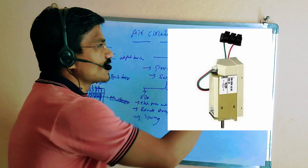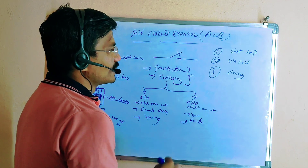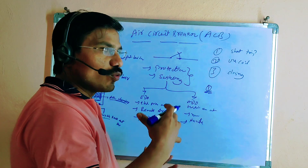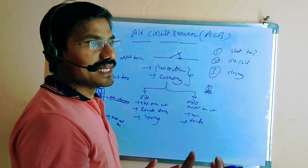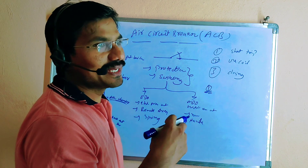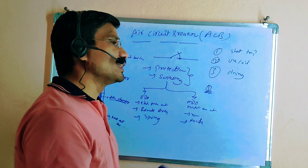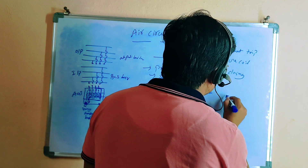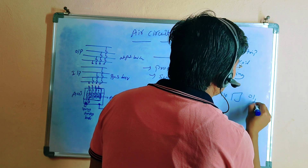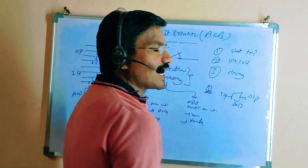In this breaker there are three main parts: the shunt trip coil, the UV coil, and the closing coil. The shunt trip coil means that if any fault occurs at the output, the relay automatically gives a trip command, and the breaker trips — isolating the input from the output.